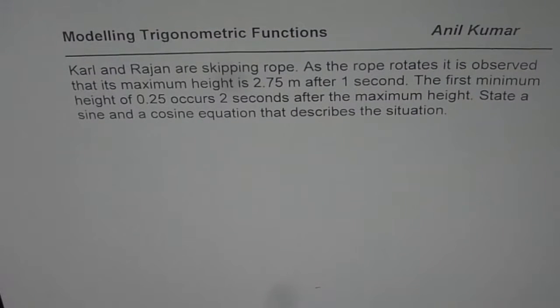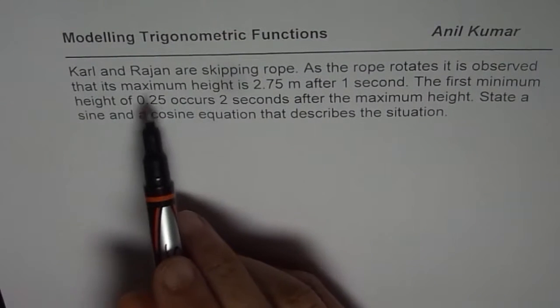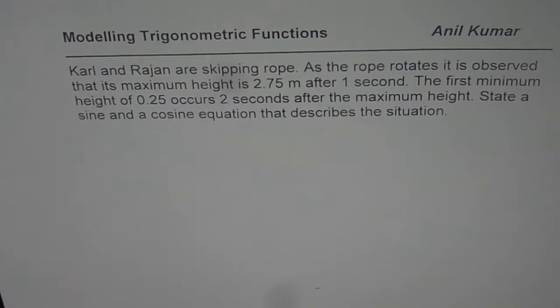I am Anil Kumar and we are working on modeling trigonometric functions. Here is another real life situation which we will model with the help of sine or cosine function. The question here is: Karl and Rajan are skipping rope. As the rope rotates, it is observed that its maximum height is 2.75 meters after 1 second. The first minimum height of 0.25 occurs 2 seconds after maximum height. State a sine and a cosine equation that describes the situation.